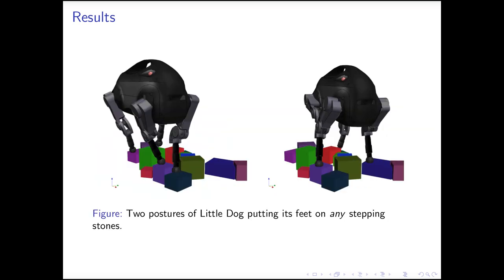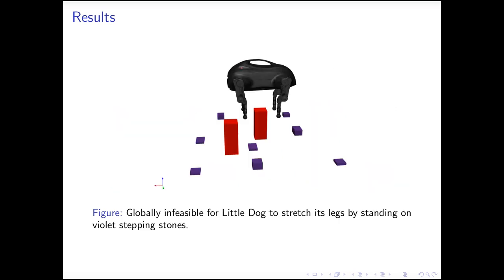We also apply our approach to the little dog. It finds multiple postures for the robot to stand on a different set of stepping stones. This demonstrates that we can search over all possible stepping stone combinations simultaneously. We put the stepping stones farther away, and our approach proves it is globally infeasible for the little dog to stretch its legs so that it can put each of its feet on one stepping stone. Our approach proves the infeasibility of all combinations simultaneously.